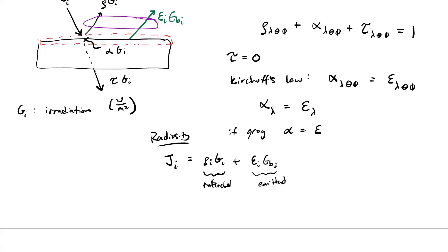If we assume the surface is opaque, τ equals zero, and since α equals ε for a gray surface, reflectivity is one minus absorptivity, i.e., one minus ε_i. So we can rewrite radiosity as J_i equals (1 - ε_i) G_i plus ε_i E_{B,i}. That's where the one minus epsilon comes from.